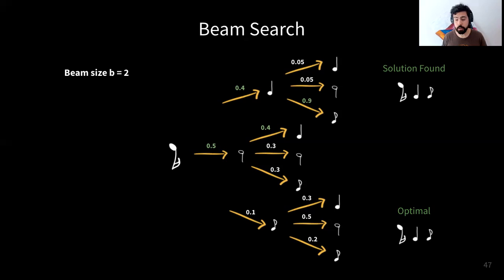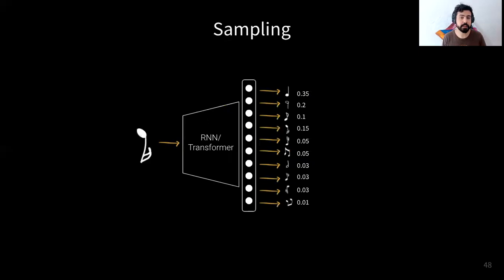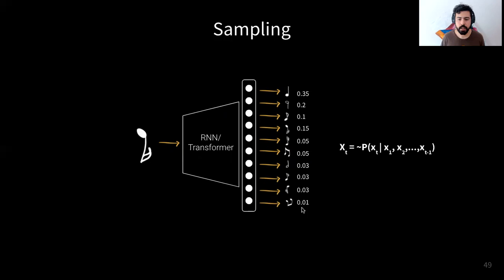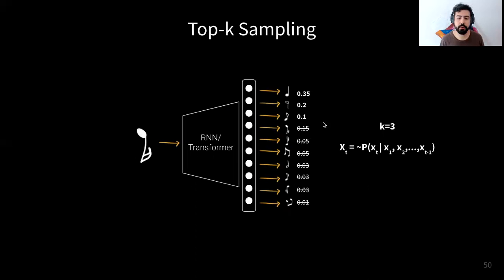Beam search is also known to be repetitive when generating sequences, and it is deterministic — so if you want stochasticity to generate different variations of pieces from the same input, that's not the solution. Instead, you'd use a sampling strategy where you sample from the probability distribution of notes. To avoid selecting bad notes, you can use top-k sampling, keeping k equals three for example, and only sampling from the top three notes in your vocabulary — giving some variety while guaranteeing some quality.